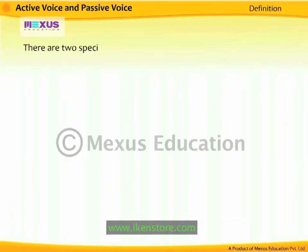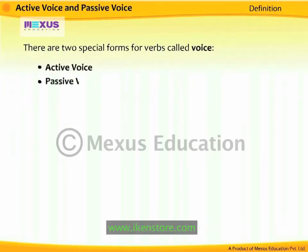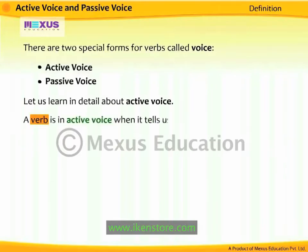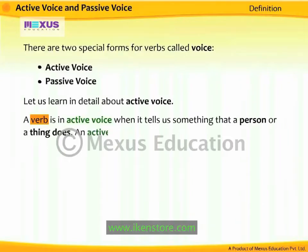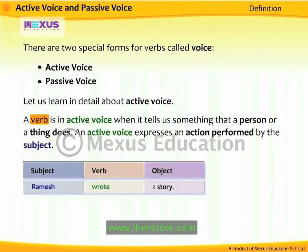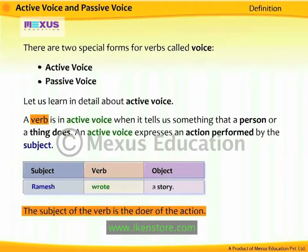There are two special forms for verbs called Voice: Active Voice and Passive Voice. A verb is in the Active Voice when it tells us something that a person or a thing does. An Active Voice expresses an action performed by the subject. For example, 'Ramesh wrote a story.' The action of writing is performed by the subject Ramesh. The subject of the verb is the doer of the action, and the object receives the action of the verb.